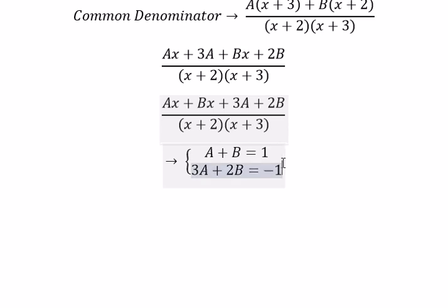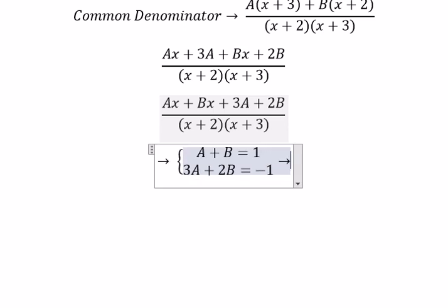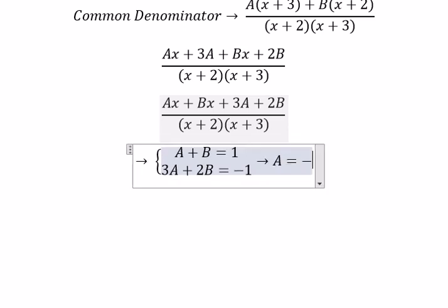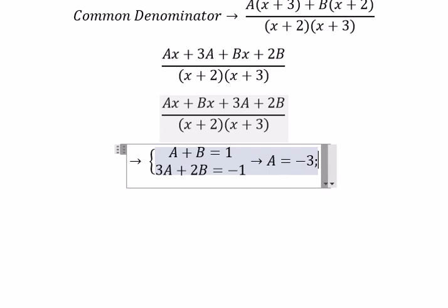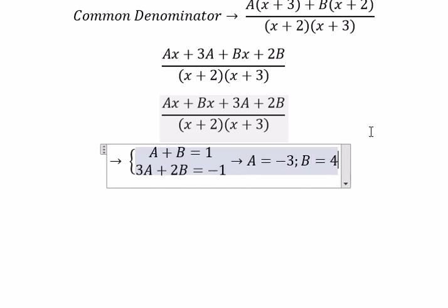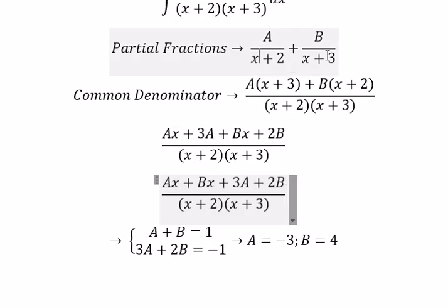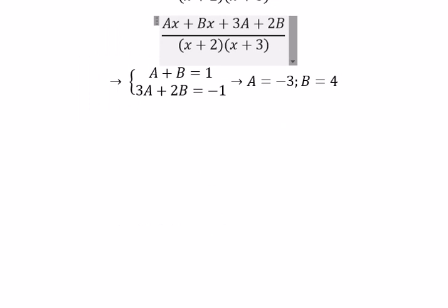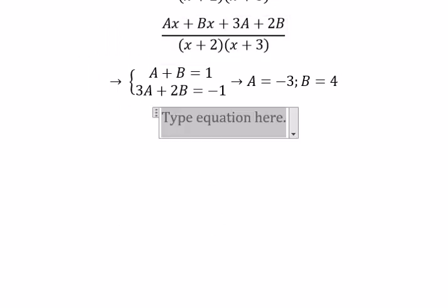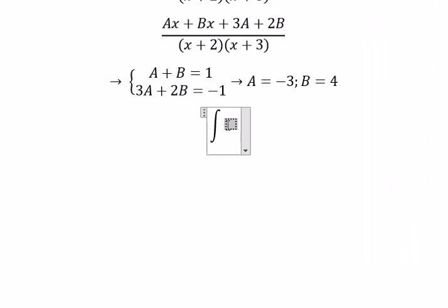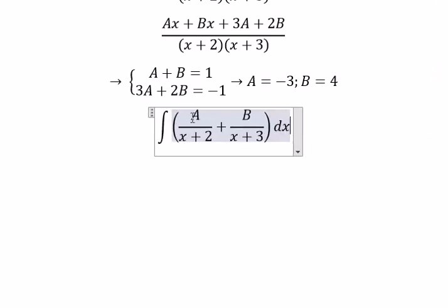So we get A equal to negative 3 and B equal to 4. We put these values in here. A is negative 3, B is 4.